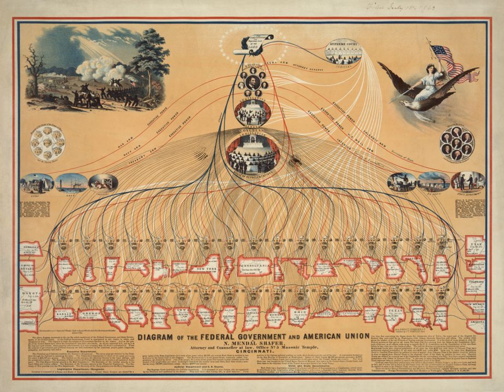The federal government is composed of three distinct branches — legislative, executive, and judicial — whose powers are vested by the U.S. Constitution in the Congress, the President, and the federal courts, respectively. The powers and duties of these branches are further defined by acts of Congress, including the creation of executive departments and courts inferior to the Supreme Court.